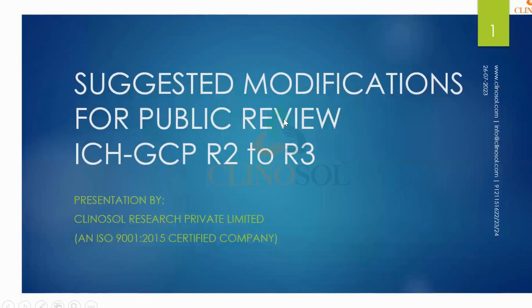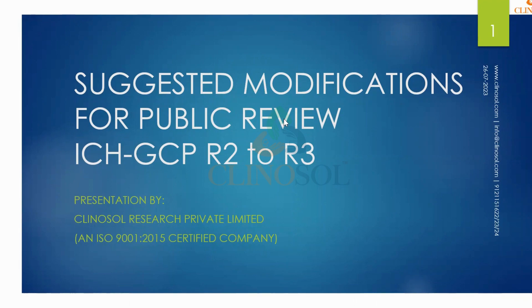These are suggested modifications for public review — not approved modifications. They have been available in the public forum so that everyone can review them and provide comments or updates to the ICH. These updates are from E6 R2 to R3. The current approved version is R2, and the newer version coming is R3.